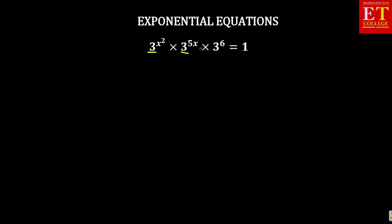We have a base of 3, times 3 to the power 6, is equal to 1. Now, because we are multiplying throughout, you can use the exponent law: a to the power m times a to the power of n — the bases are the same — equals a to the power m plus n.